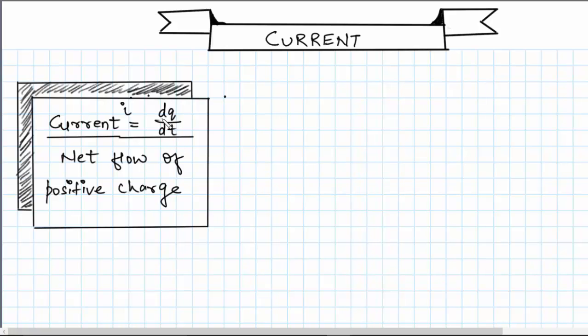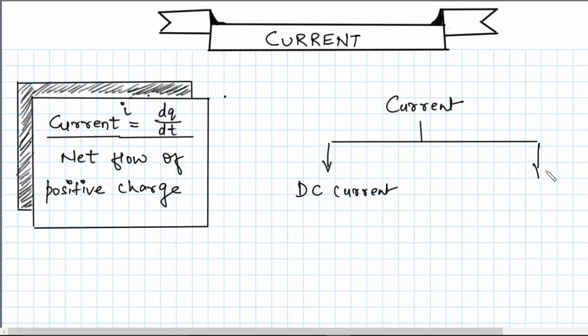In general there are two types of current. So let me just write it over here. Current is basically of two types: the first type is DC current and the second type is AC current.